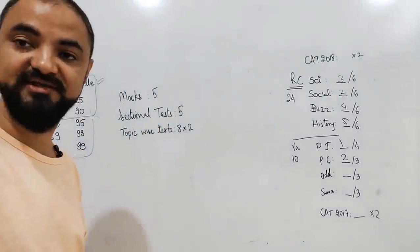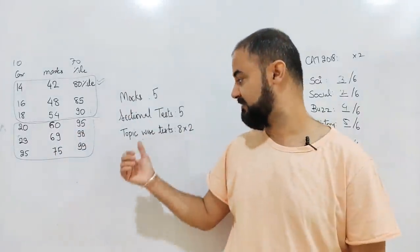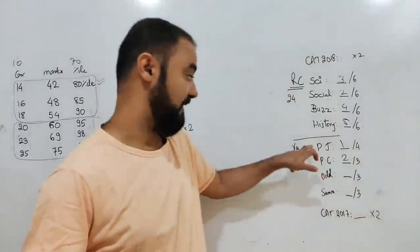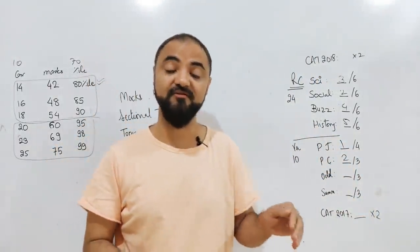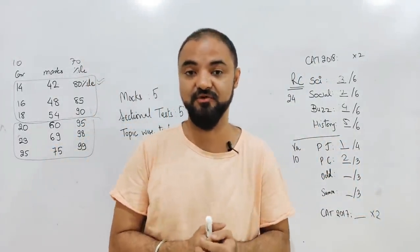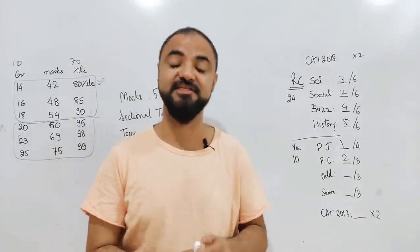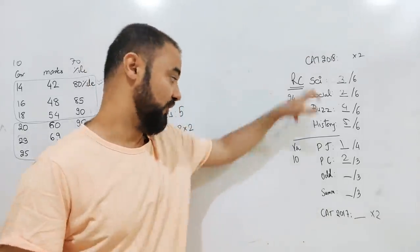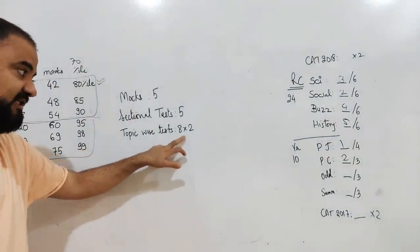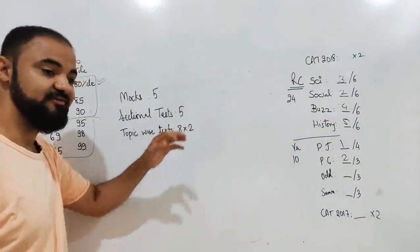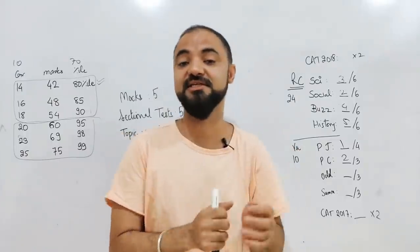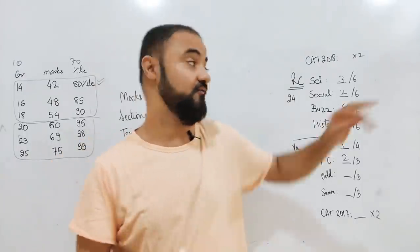Last is the topic-wise test. I want to go into para jumble, para completion, do topic-wise tests so that you can time yourself, because solving in the book is very easy, solving in the mock is not easy. So eight topics, two tests each day, total 16 tests, five sectional tests.